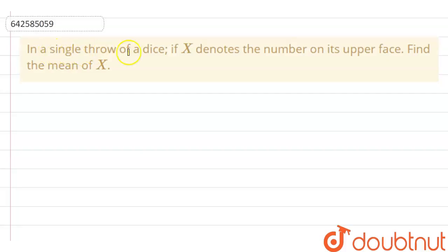Here the question is: in a single throw of dice, if X denotes the number on its upper face, find the mean of X. So here we are having a dice and we know that there are total of six numbers in a dice.